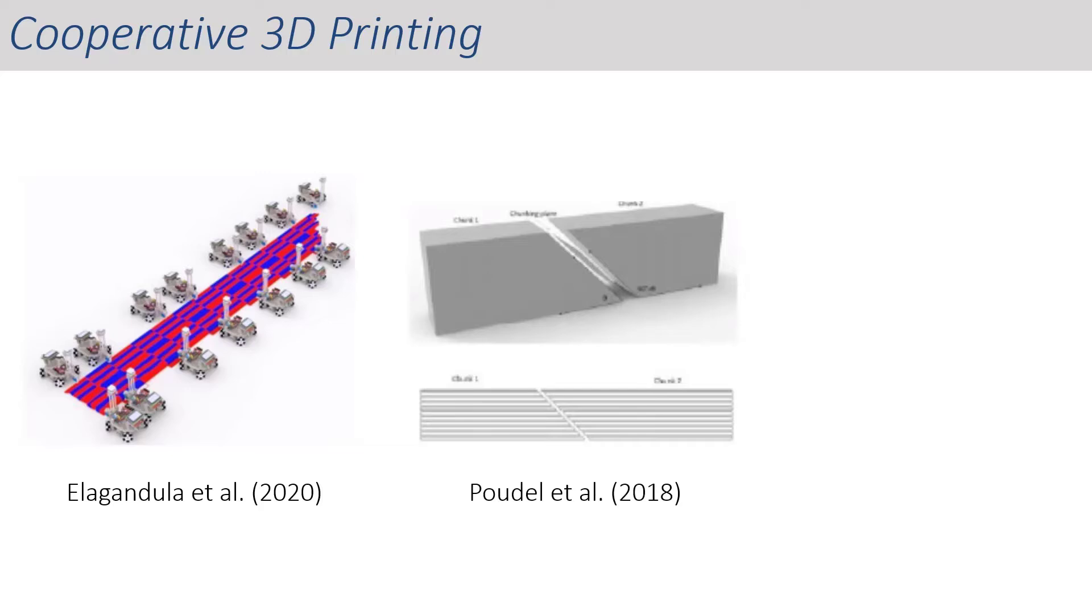Some recent approaches have utilized sloped interfaces for better bonding between different sub-volumes. While this approach retains the simplicity of robot control and communication, the interfaces between chunks are largely planar and therefore offer marginal improvement in interfacial bonding.